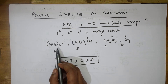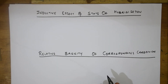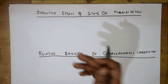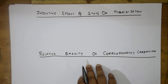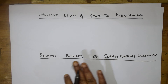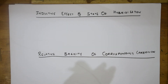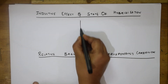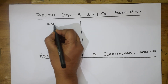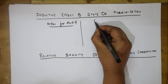More electron-releasing groups means more basicity — remember that. Now let us apply inductive effect to the state of hybridization. We will consider sp, sp2, and sp3 hybridization and see how they relate to acidity and basicity.